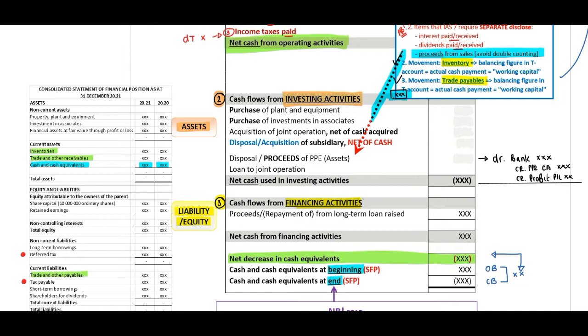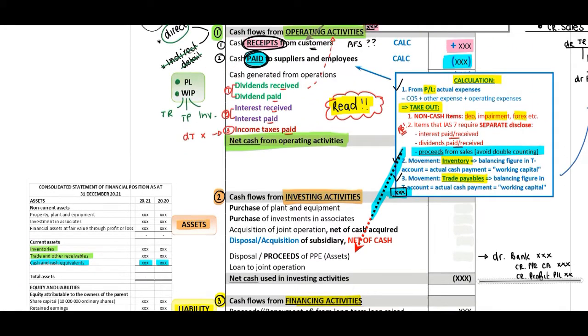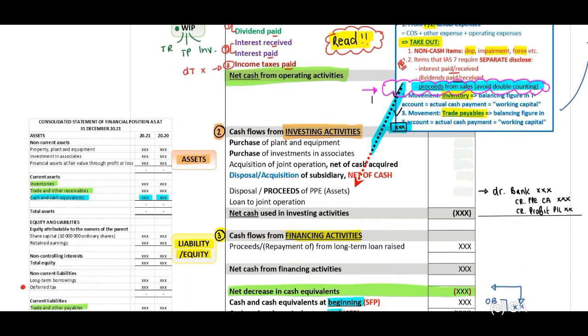Now, let's just take this one step back. You will remember in our operating activities, when we need to calculate our cash paid to suppliers and employees, we've identified that we will have to take out any proceeds or profit on the sale of an asset from our profit and loss. Now, while this is still fresh in your mind, let's just talk about why we need to do this.